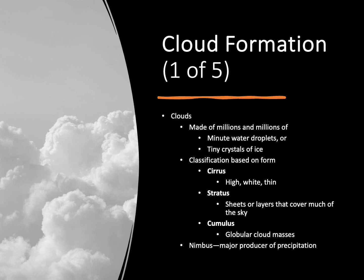We term our clouds based on where they are in our atmosphere — whether they're high, medium, or lower to the ground — and also based on their form. We're going to have four major classifications based on the shape of the cloud. Our first are cirrus clouds: really high, white, and thin — they remind me of ribbons. Our second type is the stratus cloud, which is like a sheet or layer that covers a lot of the sky. We also have cumulus clouds, which are globular cloud masses. And finally, we have nimbus clouds — these are the ones that produce most of our precipitation and are our storm clouds.